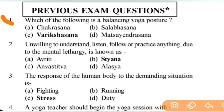Question 1: Which of the following is a balancing yoga posture? The right answer is C — Vrikshasana. Next: unwillingness to understand, listen, follow or practice anything due to mental lethargy is known as — right answer is B. All these questions are based on memory.